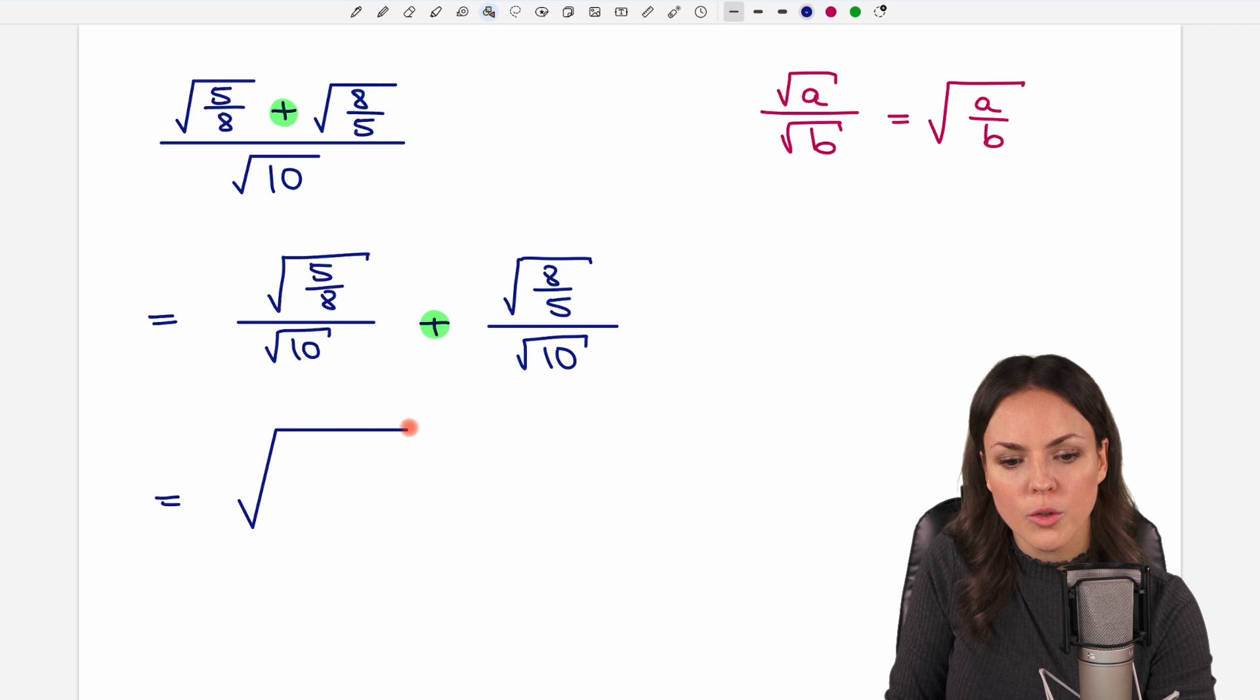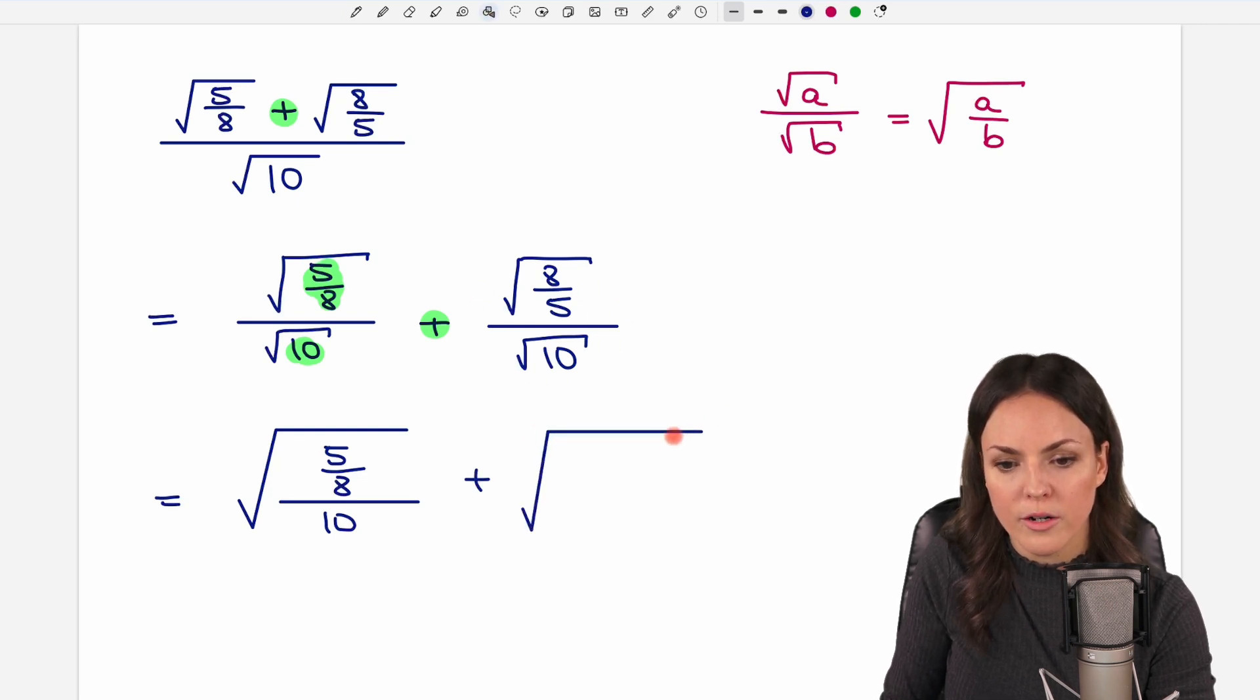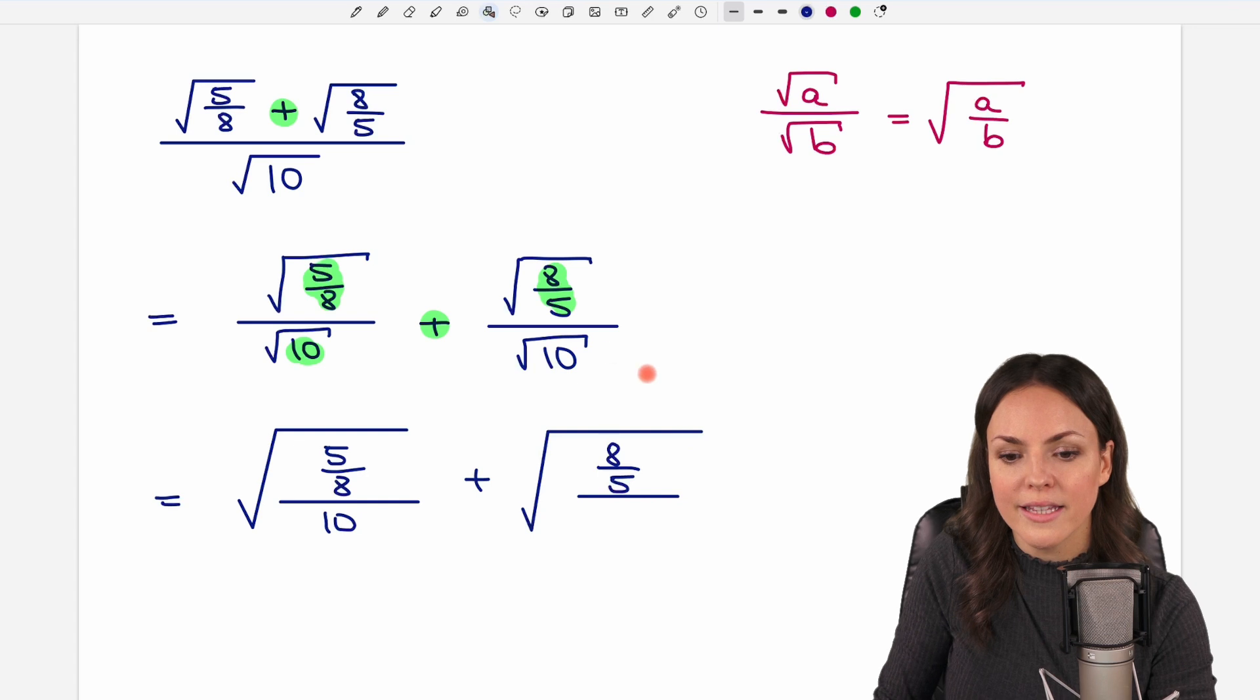We write one big square root and then we divide 5 over 8 by this number here, by 10, and we do the same here. We write one big square root and then we take the 8 over 5 and divide this by the 10.